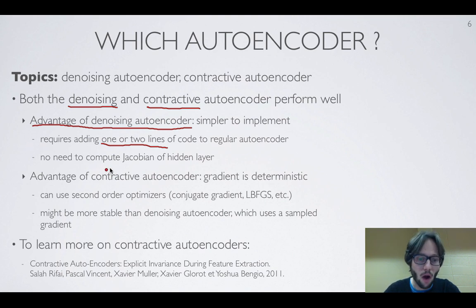It does not require computing the Jacobian of the hidden layer. So the Jacobian is this number of hidden units by number of inputs matrix, so this has some implications in terms of how slow the method could be.